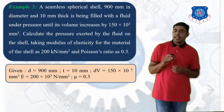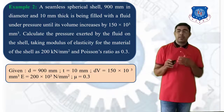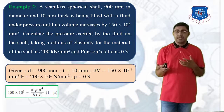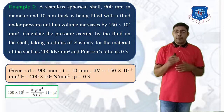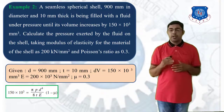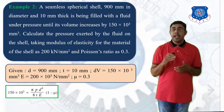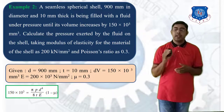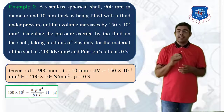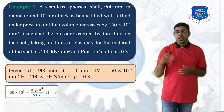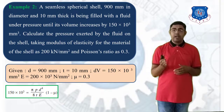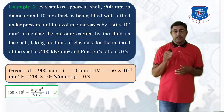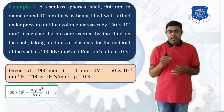Since delta V is given, we use the equation: delta V = (π × P × D⁴) / (8 × T × E) × (1 − nu). We place delta V = 150 × 10³ in this equation.